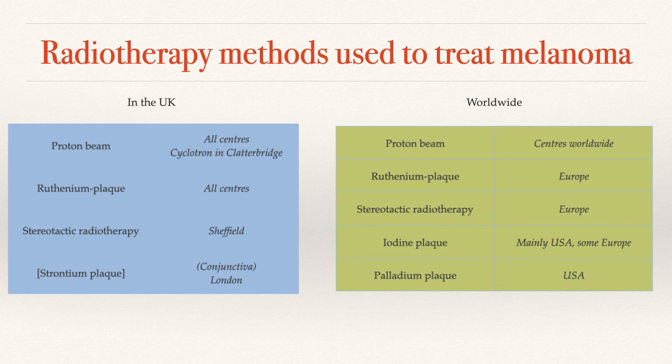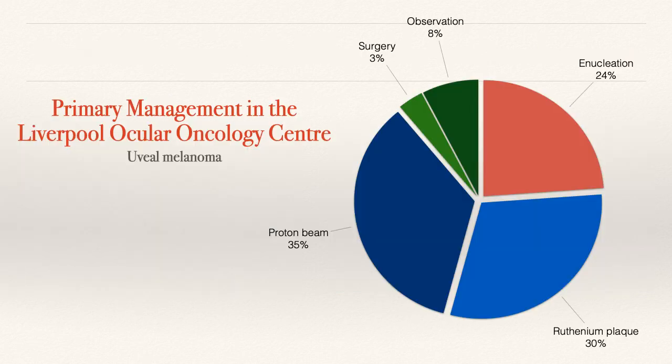In the UK we're extremely lucky to be able to use proton beam radiotherapy — there are not many centres across Europe or the world. The main radioisotope that we use for plaque brachytherapy is ruthenium-106, whereas that is not common over the water in the States. In Liverpool, our most common treatment is primary radiotherapy in two-thirds of our patients, with still about a quarter of patients who undergo primary enucleation.